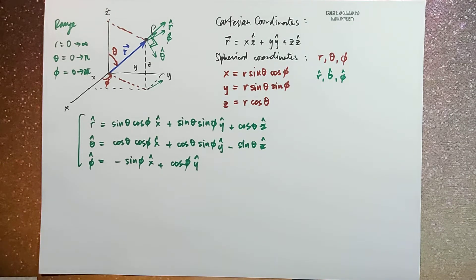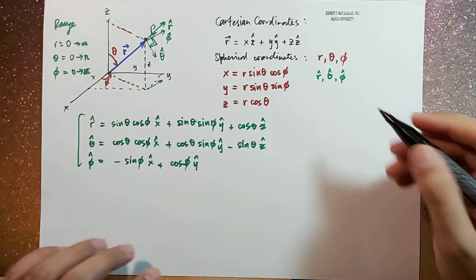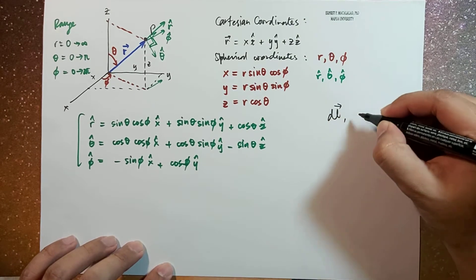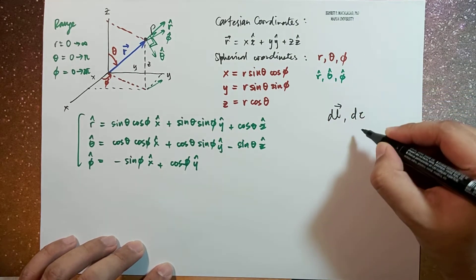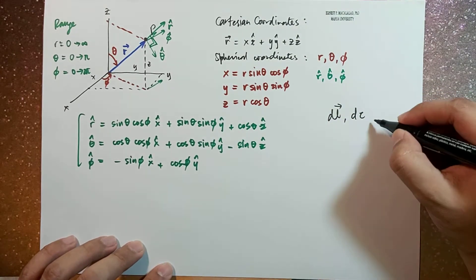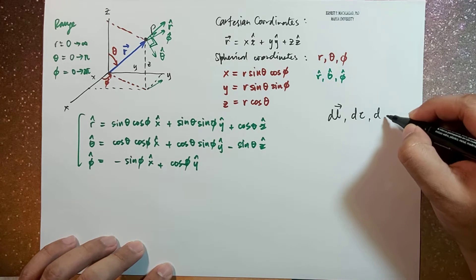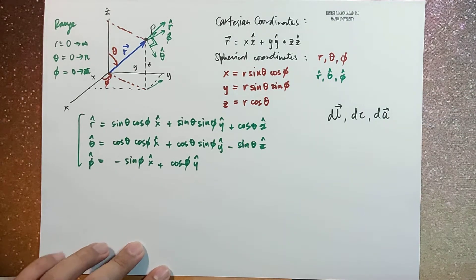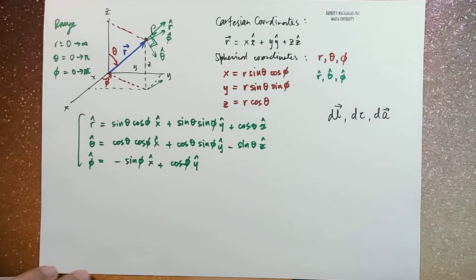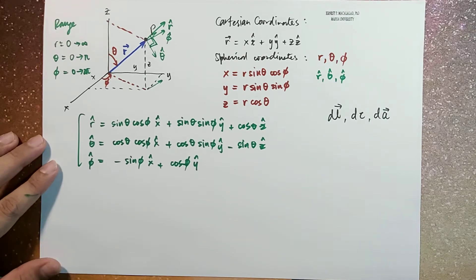In this video, we're going to express the element dl, d-tau which is your volume element, as well as your area element dA in the spherical coordinate system.